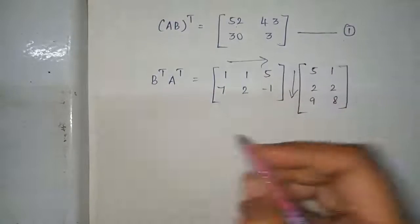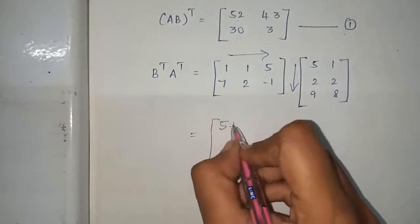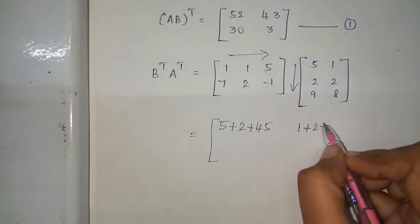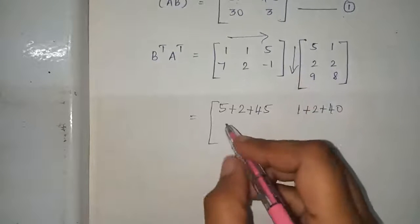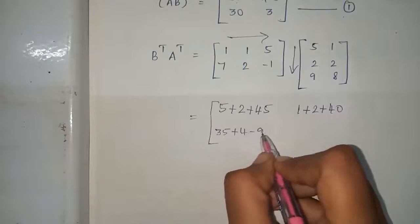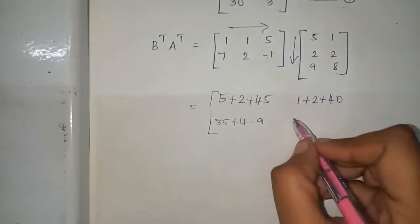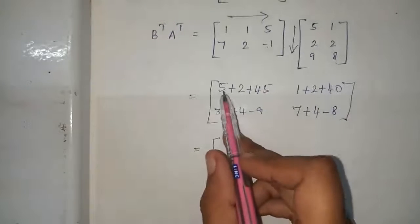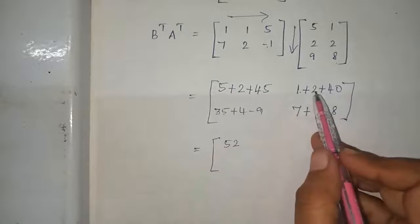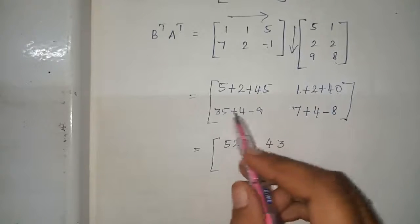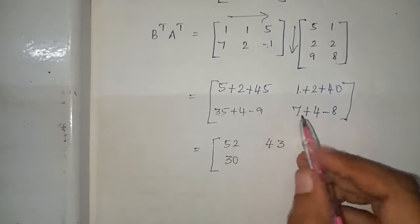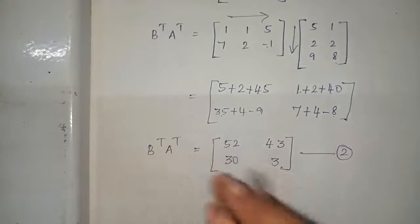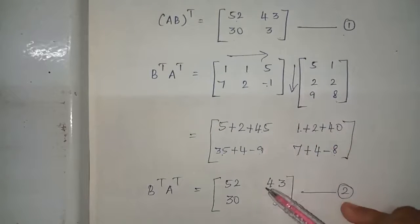Computing B transpose times A transpose: first row first column — 5 plus 2 plus 45 equals 52. First row second column — 1 plus 2 plus 40 equals 43. Second row first column — 35 plus 4 minus 9 equals 30. Second row second column — 7 plus 4 minus 8 equals 3. This is equation number 2. From equations 1 and 2, (AB) transpose equals B transpose times A transpose. Hence verified.